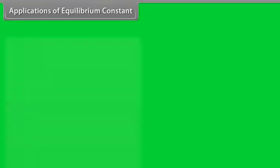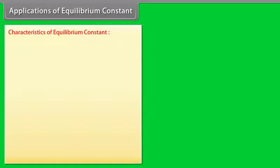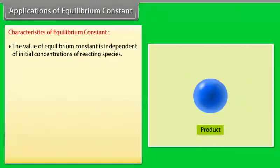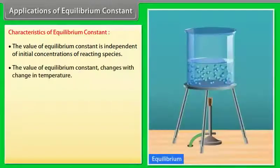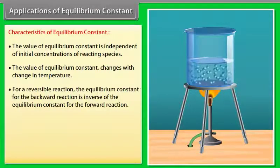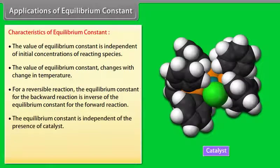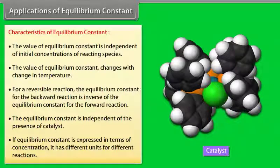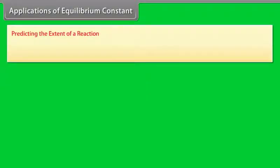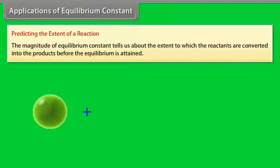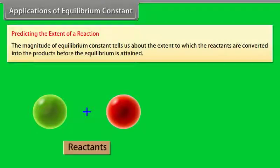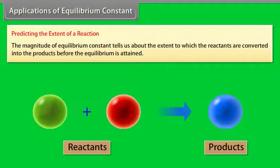Applications of Equilibrium Constant. Characteristics of the equilibrium constant: its value is independent of initial concentrations of reacting species; it changes with change in temperature; for a reversible reaction, the equilibrium constant for the backward reaction is the inverse of that for the forward reaction; it is independent of the presence of a catalyst; and if expressed in terms of concentration, it has different units for different reactions. The magnitude of the equilibrium constant tells us the extent to which reactants are converted into products before equilibrium is attained.